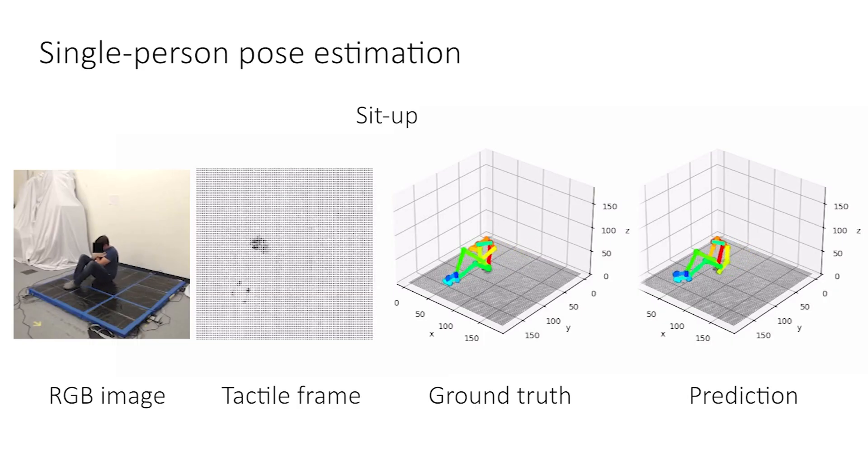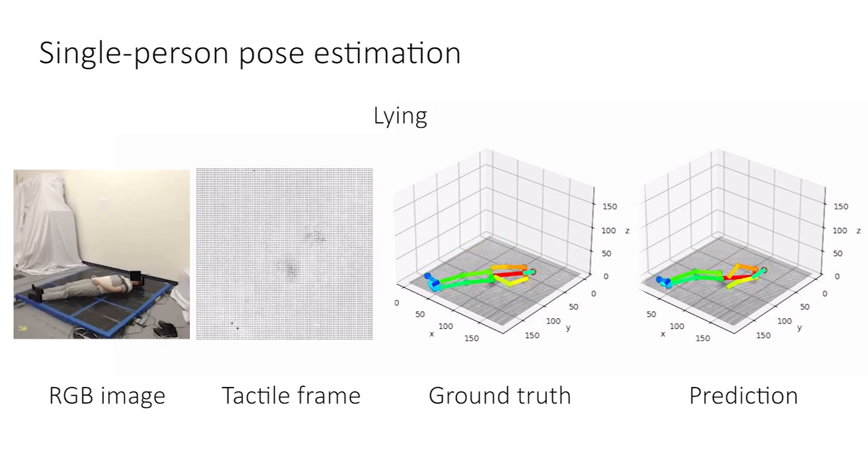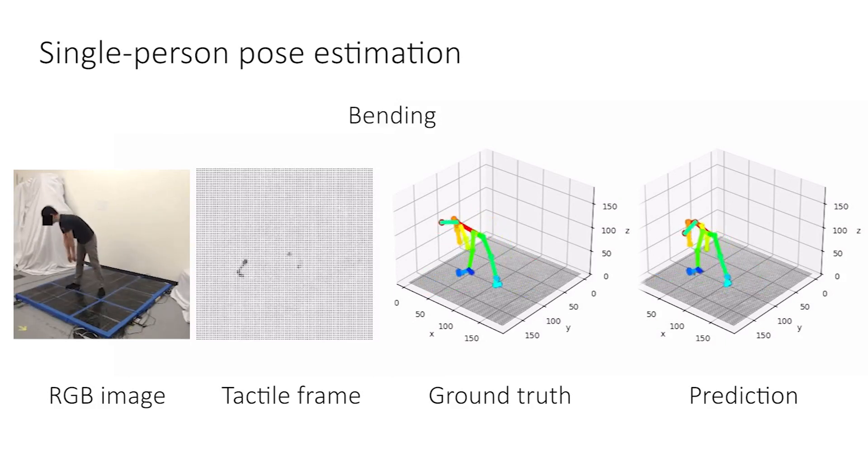Our model predicts the 3D human pose from a diverse set of daily activities, including walking, sitting, lying, and exercising. The ground truth here is captured by the cameras and extracted by OpenPose, while the prediction is generated from our model using only the tactile frames as input.